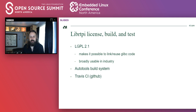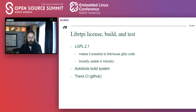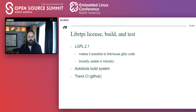In terms of license, build, and test: LibRTPI is licensed under LGPL. We decided on that because it makes it possible to link and reuse glibc code — we've done that by importing the glibc tests and some of the code we had already contributed to glibc. It's also broadly usable in the industry. Darren set up an AutoTools build system for this project and thread CI for running tests on GitHub.